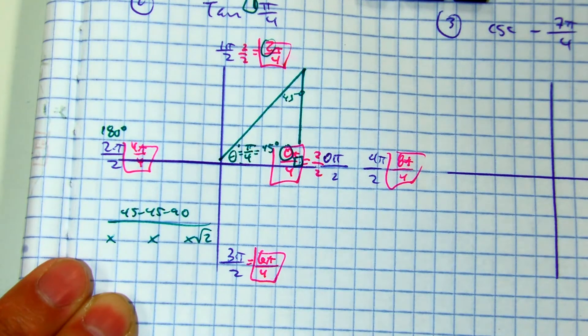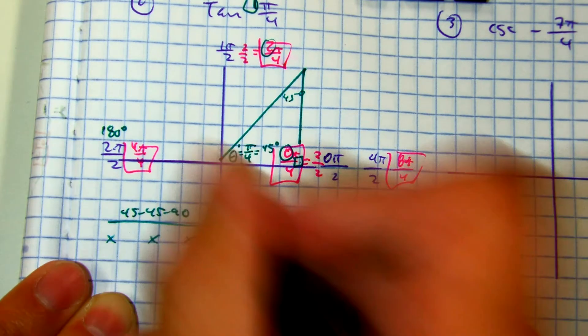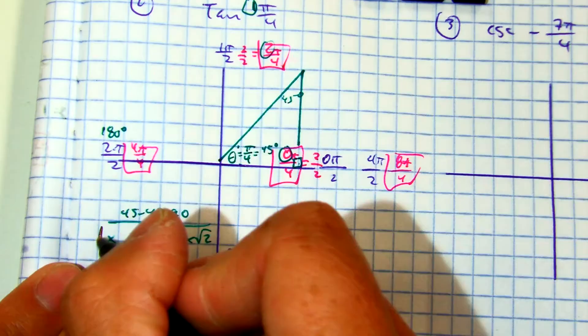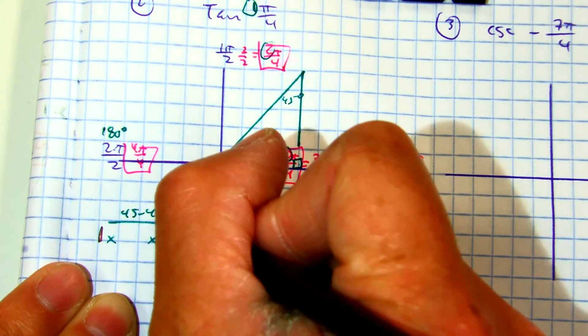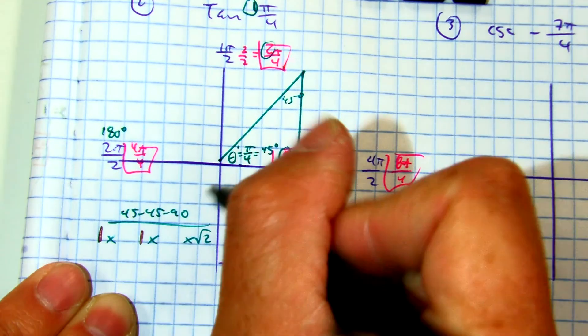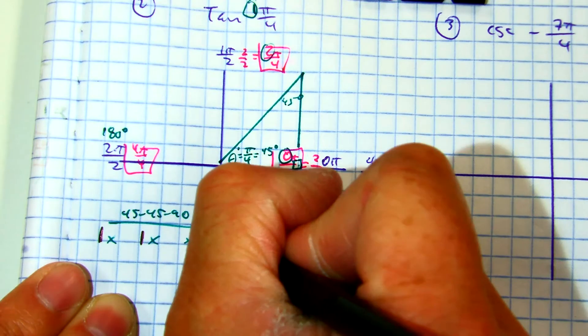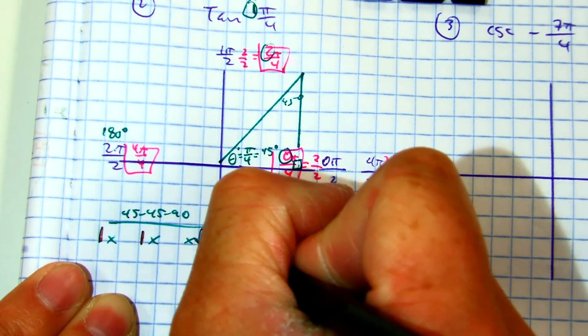Everyone say, always. It'll always be a 1 across the 45. It'll always be a radical 2 across the 90. Always.